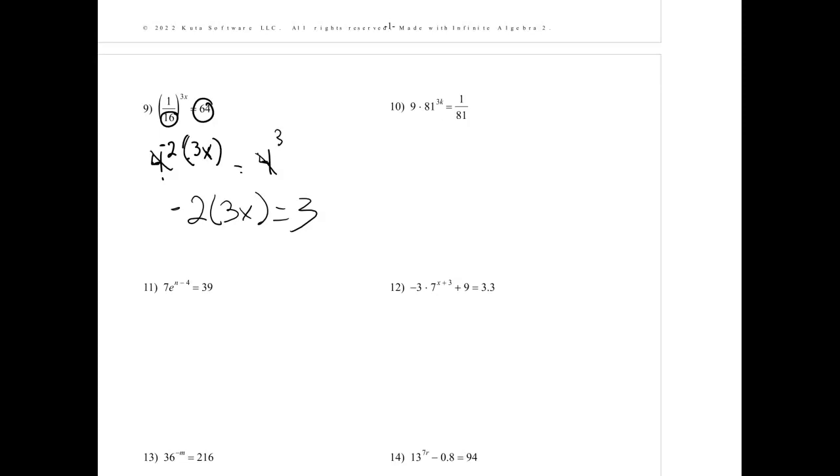And then for instance, 11, I first want to get that base and exponent, that e to the n minus 4 alone. So I'm going to divide by 7. And 39 divided by 7, I don't know. Let's see. It's not a nice number. So I'm actually just going to leave it like that. And now, sorry, I had to pause. A little cough there.